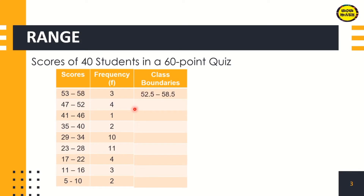Next, we have 47 to 52, the second class. So 47 minus 0.5 is 46.5, and 52 plus 0.5 is 52.5. The next class: 41 minus 0.5 is 40.5, then 46 plus 0.5 is 46.5. Next is 35 to 40: 35 minus 0.5 is 34.5, then 40 plus 0.5 is 40.5.